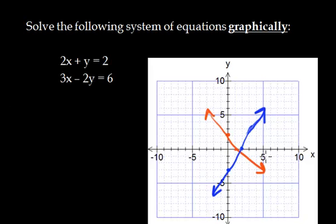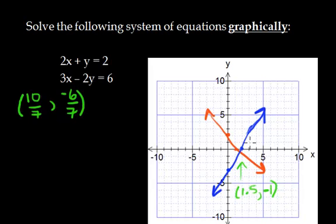And your solution to this one actually is approximately around one and a half for your x value, and it's close to negative one, but not quite there. So the actual solution to this system ends up being 10 over 7 and negative 6 over 7. Which you can see is not going to be very easy to graph. So this is the limitations of solving systems of equations graphically. And this is where it comes in handy learning to solve these systems using substitution or elimination, which we look at in the next couple of videos. So have a look at those and do lots of questions. Thanks for watching.